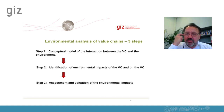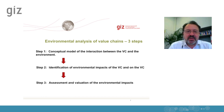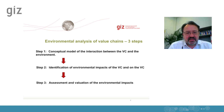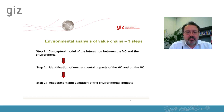In step two, we identify the main environmental impacts of the value chain — like inefficient use of energy — and point out the impact of the environment on the value chain, like rising resource prices. Our main tools in step two are the matrix and the list of environmental impacts. In step three, we evaluate the severity of the environmental problems, for instance based on a qualitative hotspot analysis.